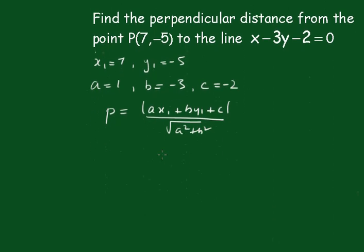Now just filling all that in, we get p equals 7 plus 15 minus 2, all over the square root of 1 squared, which is 1, and -3 squared, which is 9. And that comes down to 20 over root 10.